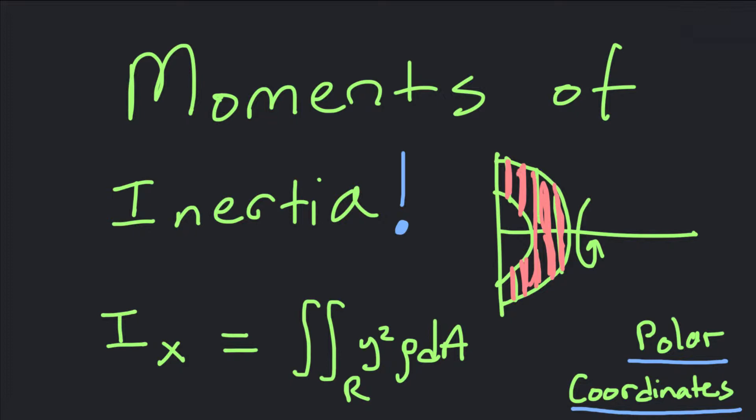This is going to be a lamina in that it's negligibly thick, so the area really determines the density. Knowing the density is just a function of the area, not really the thickness, helps us determine the moment of inertia for a lamina.